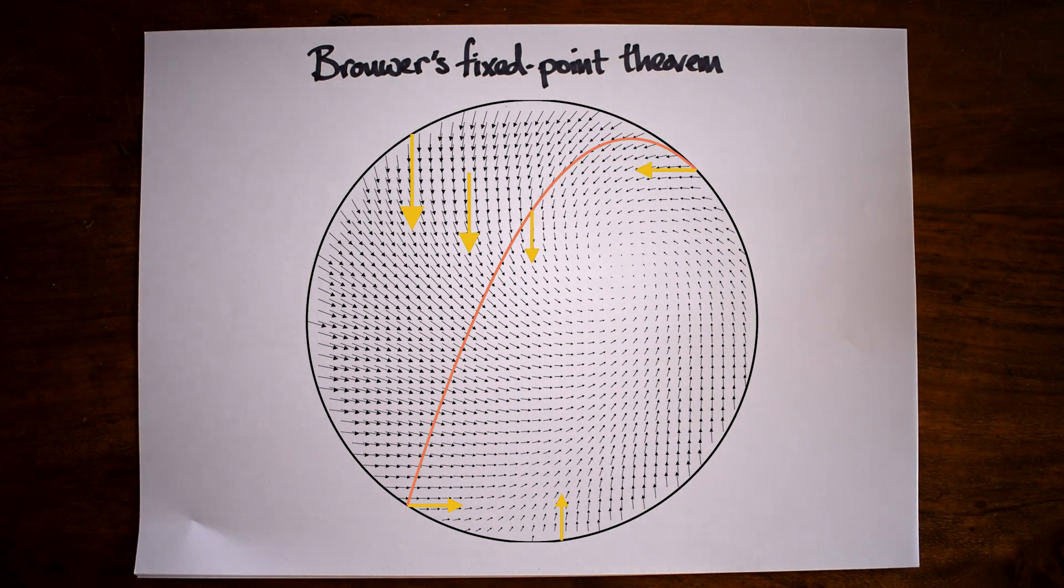We transformed continuously between those two paths, and so there must be a whole line of vertical vectors. In fact, if we sweep over the entire set, we'll find that that line connects the up and down vectors on the border.